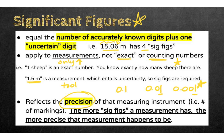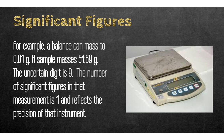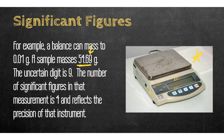A balance that can mass to 0.01 gives a sample mass of 54.69 with four significant figures — the uncertain digit is the 9. Balances give us all the significant figures we need to report without having to analyze intervals on the instrumentation.